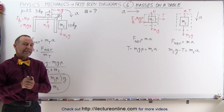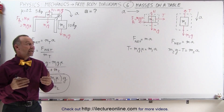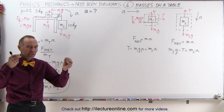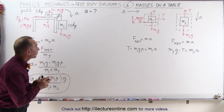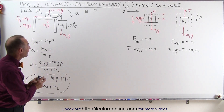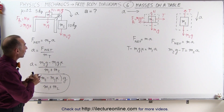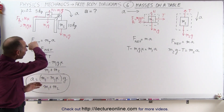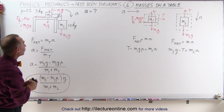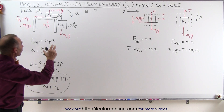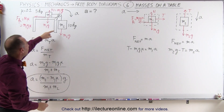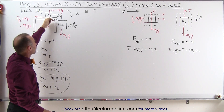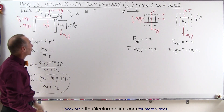Welcome to ElectronLine. We're going to tackle the problem with objects on the table and objects hanging down. They're connected with a string, and the pulley redirects the string. The whole system will be accelerating with M2 pulling M1 to the right, and M2 will go down.